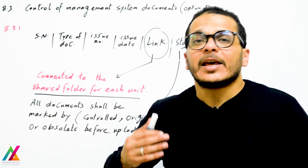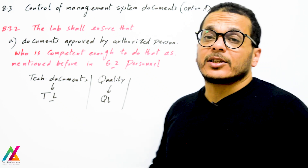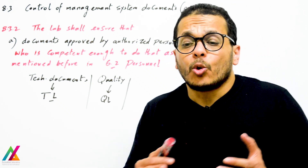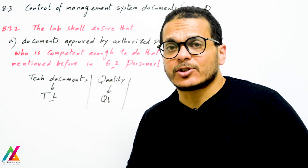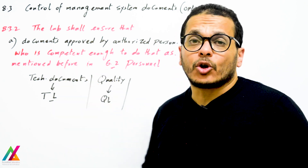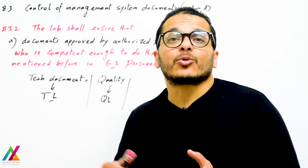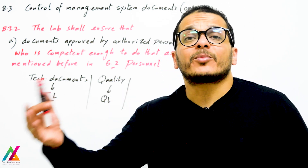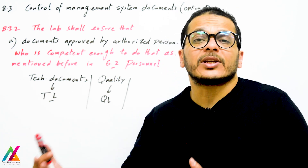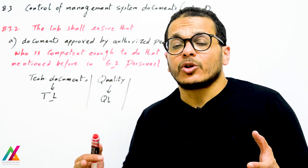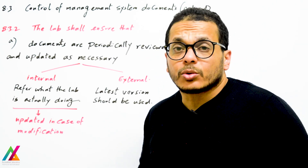This is the easiest way to control documents electronically, but if you have another way that's fine — the standard doesn't specify how. Second requirement: the lab shall ensure that documents are approved by authorized personnel who are competent and experienced. As mentioned in clause 6, all technical documents are approved by the technical lead for each unit, quality documents by the quality lead, purchasing documents by the purchasing officer, and training documents by the training officer.